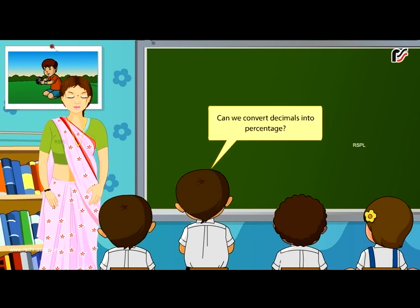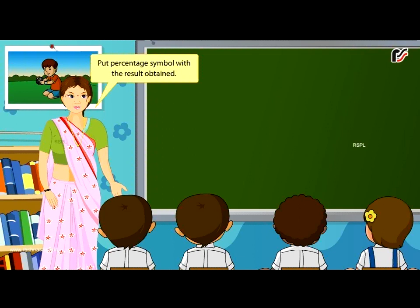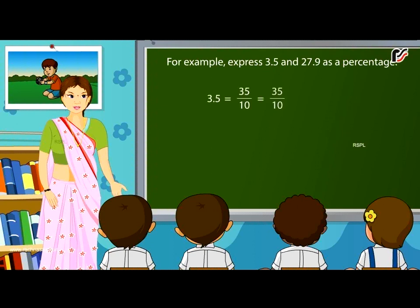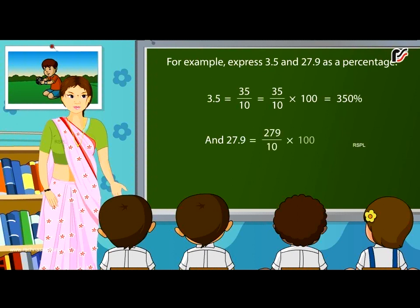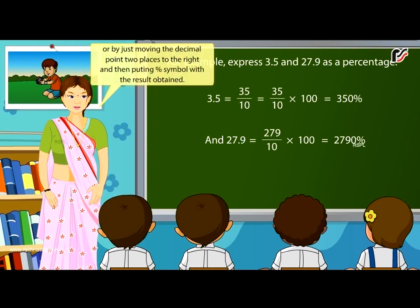Can we convert decimals into percentage? Yes, of course. To convert a decimal into percentage, first write the decimal number in fractional form and then convert it into percentage by multiplying by 100, then put the percentage symbol. For example, 3.5 = 35/10 × 100 = 350%, and 27.9 = 279/10 × 100 = 2790%.